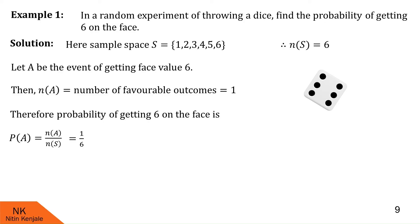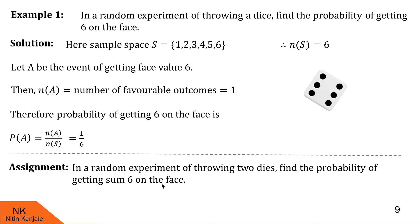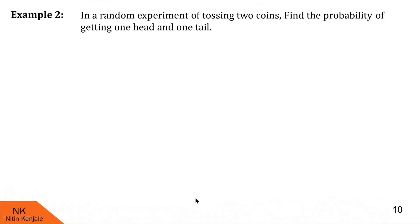Next, I have an assignment for you. A similar type of example is given as homework, with the final solution also provided so you can check your answer. Now let us proceed to example number 2. In a random experiment of tossing 2 coins, find the probability of getting 1 head and 1 tail — meaning one coin gives head and the other gives tail.